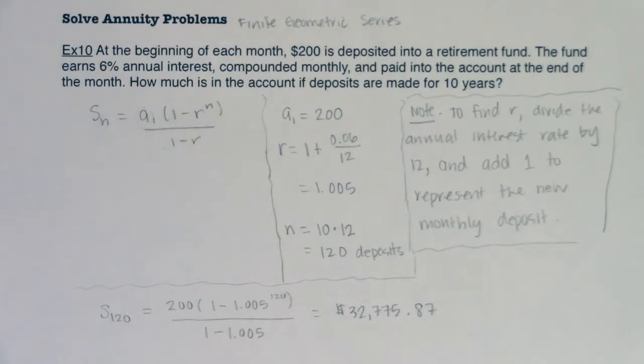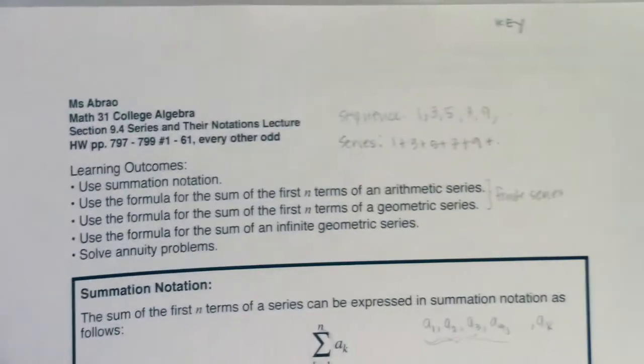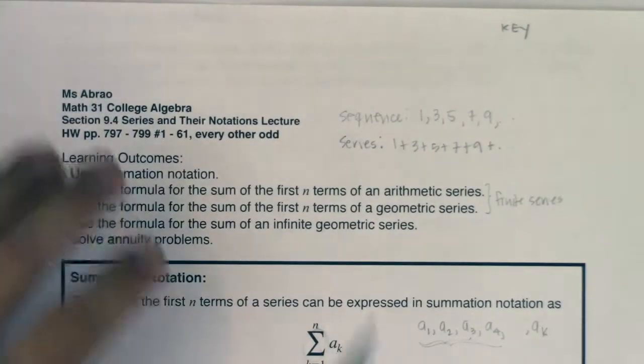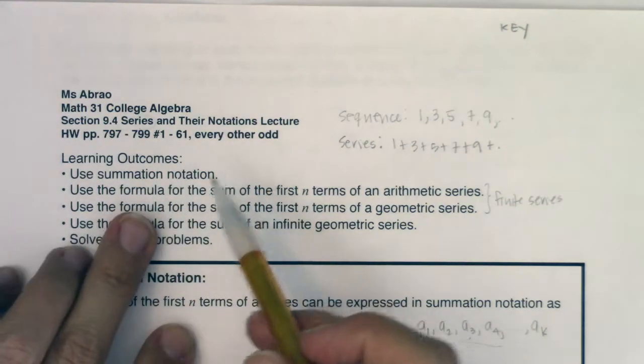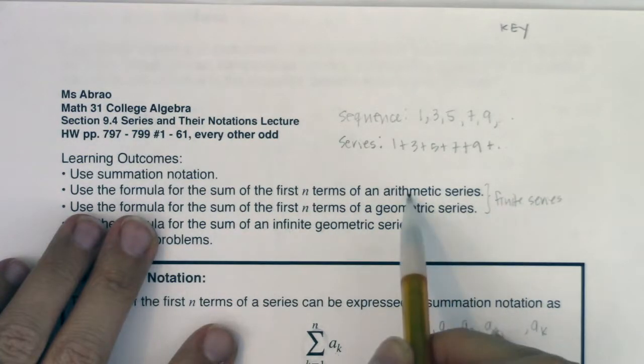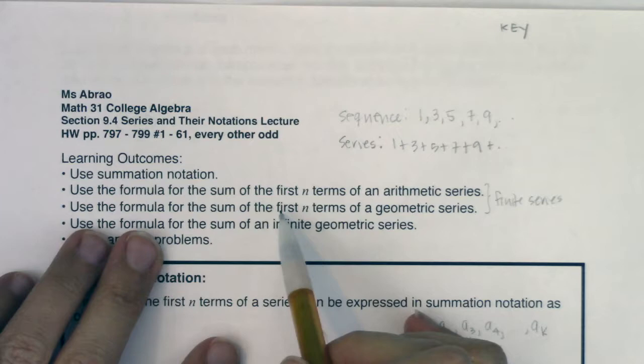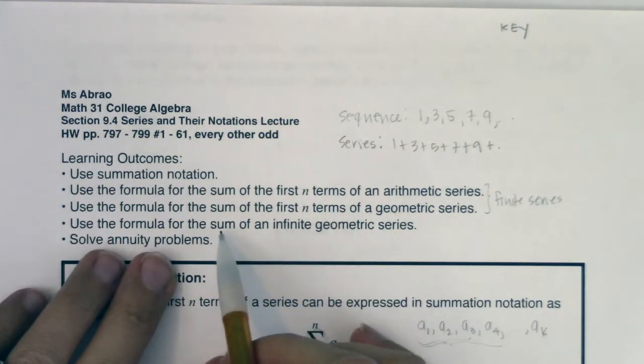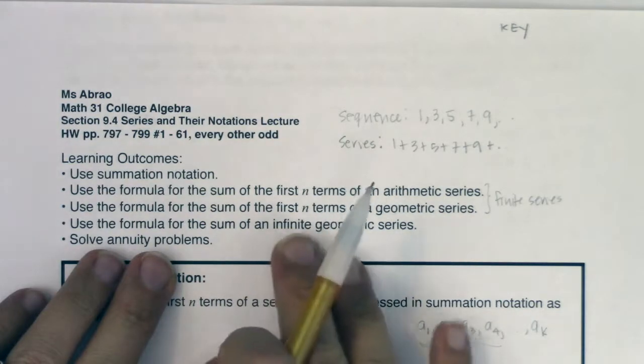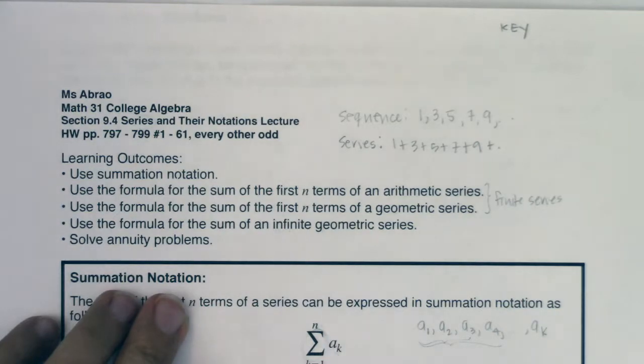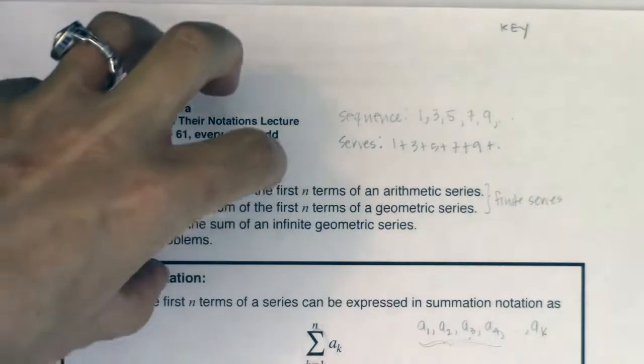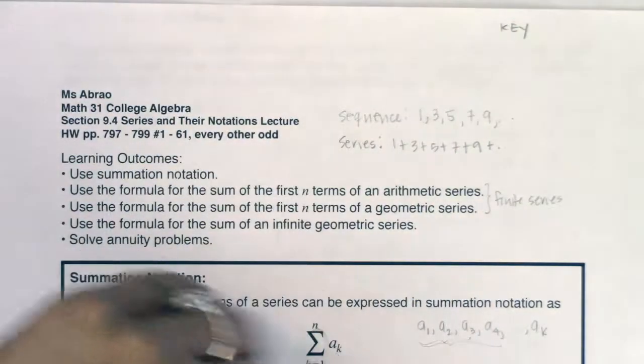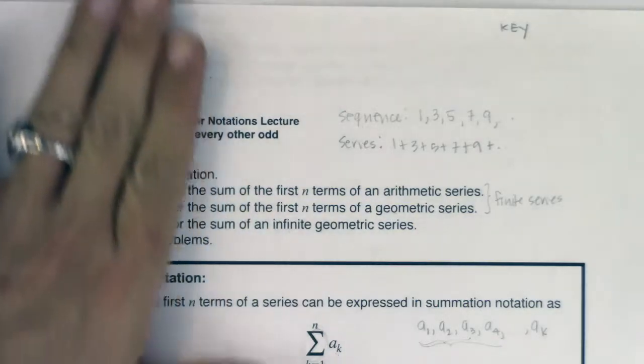We're at the end of 9.4, and there was a lot in 9.4. Let's be real clear in what we know how to do. We should be comfortable with summation notation. If I give you a capital sigma, that E looking thing, we should be able to follow that series out. We should be able to find the first n terms of a finite arithmetic series. There are two formulas that go with that. We should be able to find the sum of the first n terms of a finite geometric series. There's a formula that goes with that. We also looked at the sum of an infinite geometric series. That's when your absolute value of r has to be less than one. And then we solved an annuity problem.